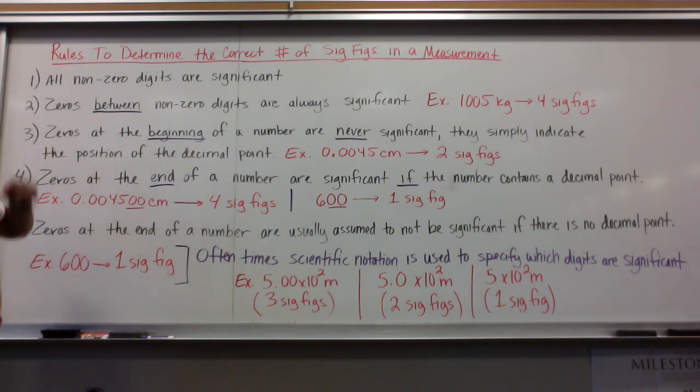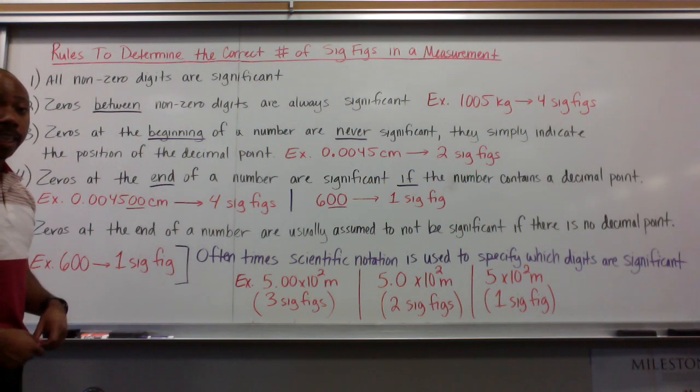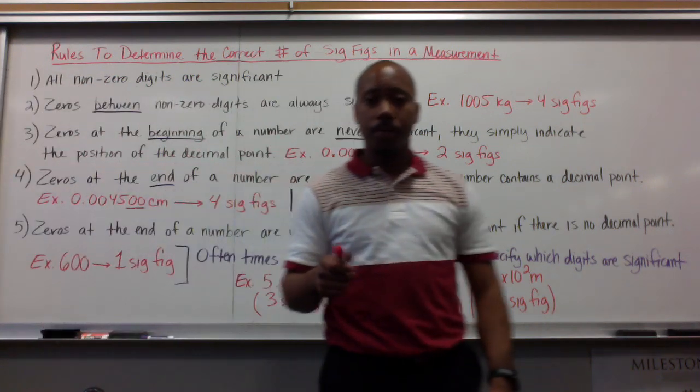So rules to determine the correct number of significant figures in a measurement. Rule number one, all non-zero digits are significant. So anything that's not a zero is a significant figure.